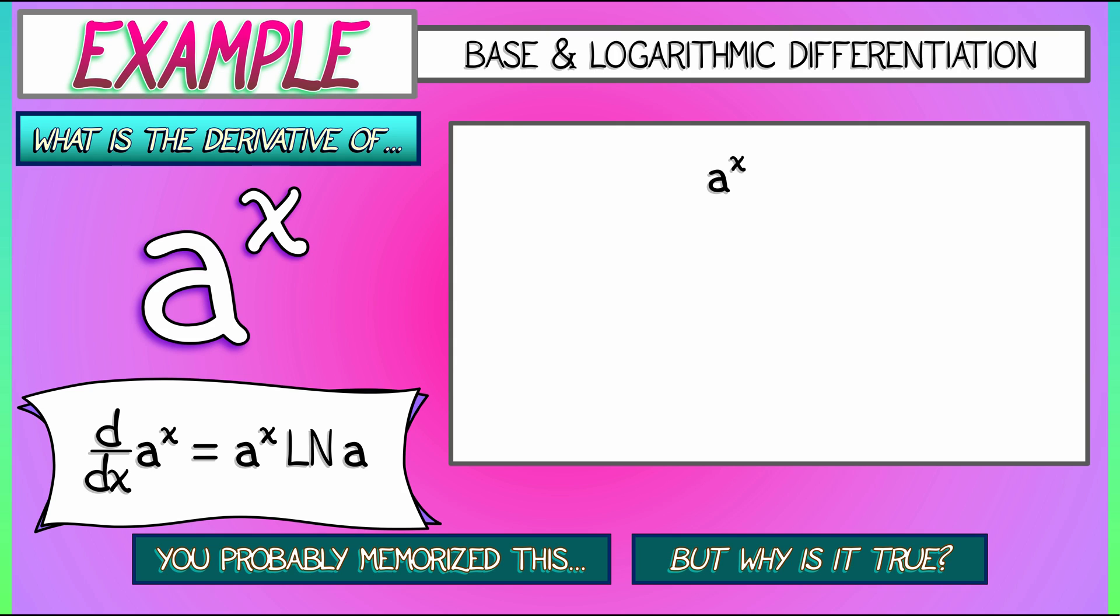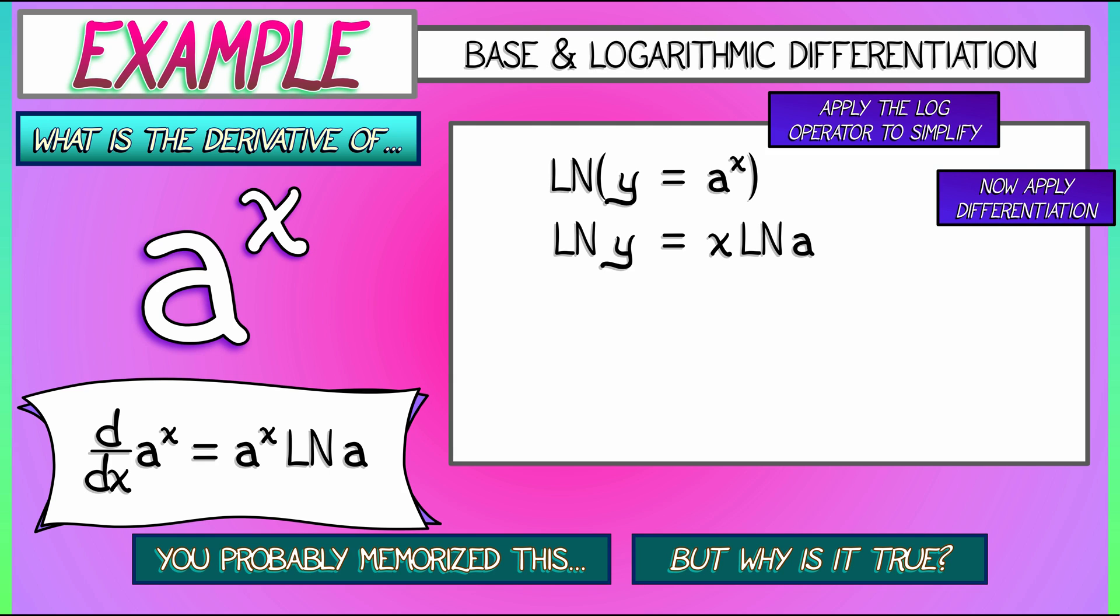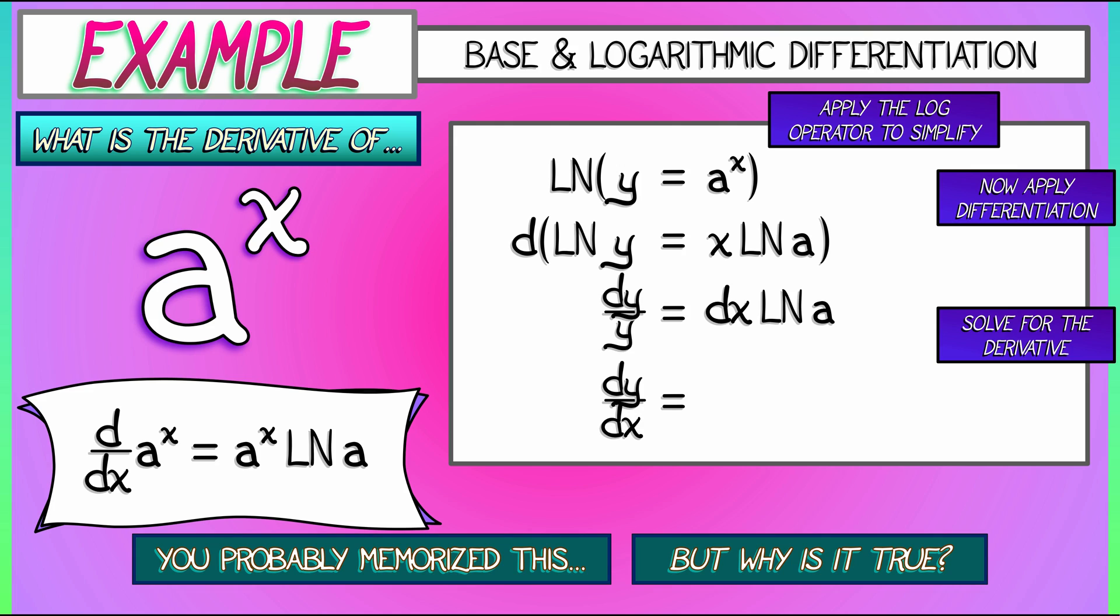Let's apply the same technique and see where that log of a comes from. If I take a to the x, set it equal to y, apply the log operator to simplify this. What do I get? I get that log of y is x times log of a. Now, when we differentiate that implicitly, we get that dy over y is dx times log of a. No product rule involved. Solving for the derivative gives us what? dy dx is y times log of a. And that, of course, is the answer that we know and love. But that's where that log of a comes from. It comes from the application of this log operator.